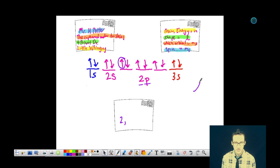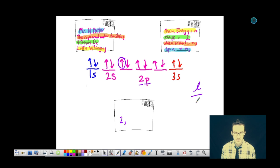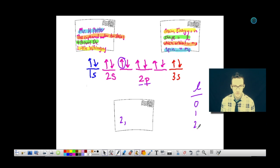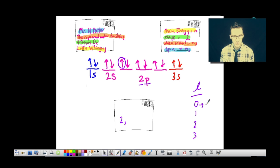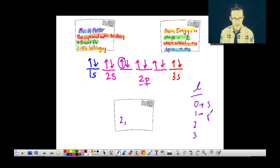And the L values are either going to be 0, 1, 2, or 3. And those correspond to the S, P, D, or F shaped orbitals. Because we're in a P orbital, our angular momentum quantum number, our L value, is going to be 1.